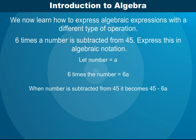6 times a number subtracted from 45 is equal to 45 minus 6A. Thus, the expression is represented as 45 minus 6A.